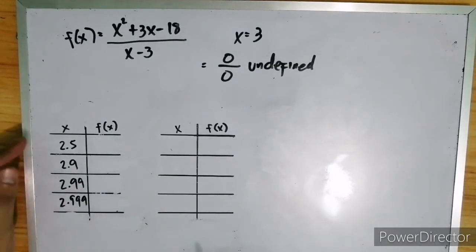Now, as you can see, the value of x is getting closer and closer to 3 but not equal to 3, because we're trying to check what happens to the function as x approaches 3. Then, let us evaluate the function by this given value of x. So, you can use your calculator.